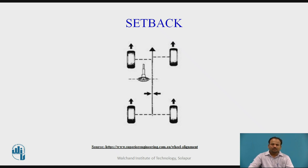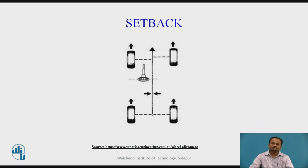The next type is setback. Wheel setback is the difference in vehicle wheelbase from one side to the other. It occurs when one wheel is behind the other on the same axle. Setback occurs from production tolerances during vehicle manufacturing, impact damage, or improper placement of the engine or subframe. A vehicle may drift or pull towards the side with the shorter wheelbase. Setback of more than 19mm is considered excessive and indicates bent parts.